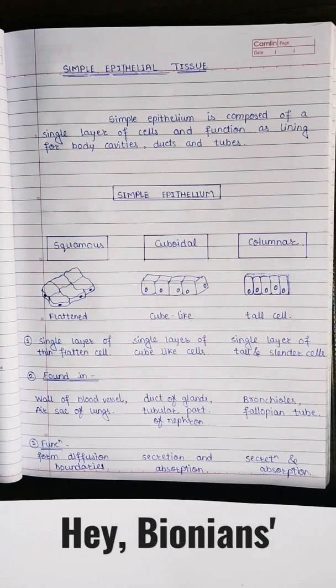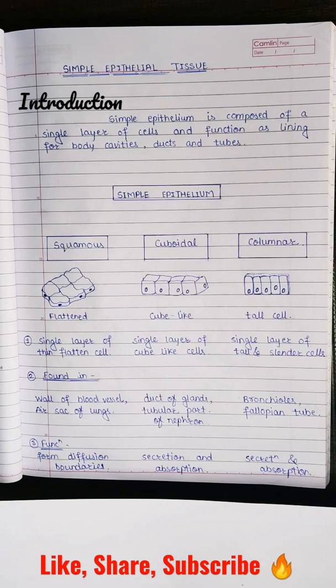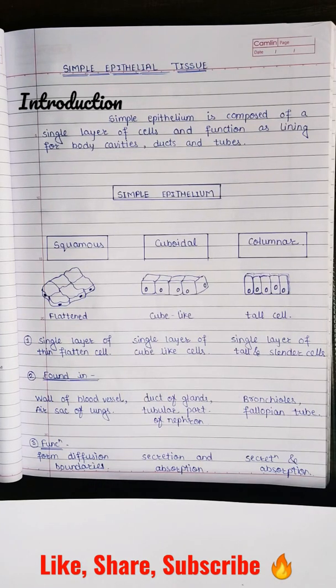Hello guys, welcome to your own channel Biology in Shorts. In today's topic, we are going to cover simple epithelial tissue. Simple epithelium is composed of a single layer of cells and functions as lining for body cavities, ducts, and tubes.